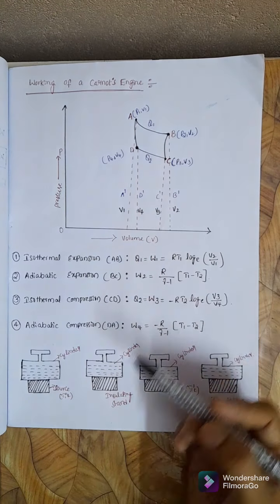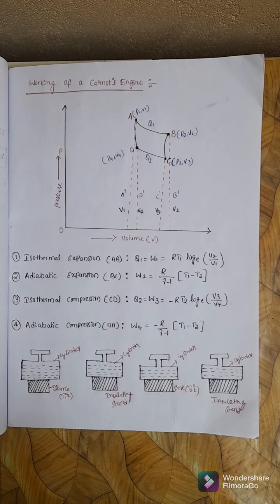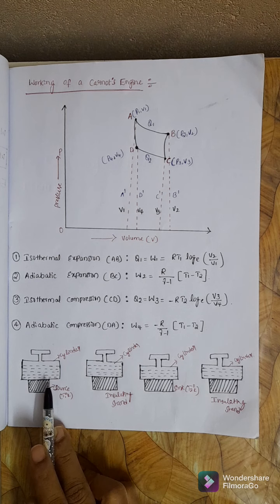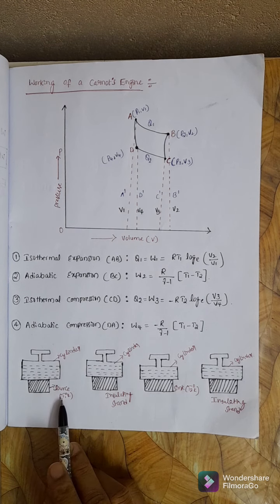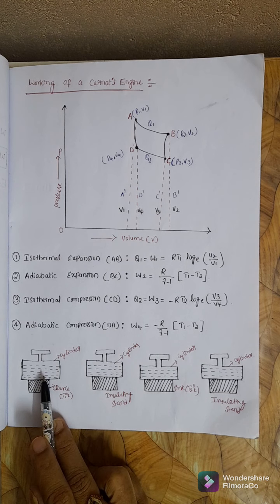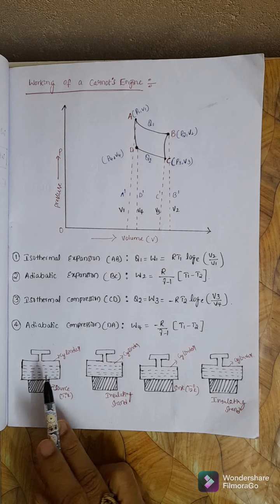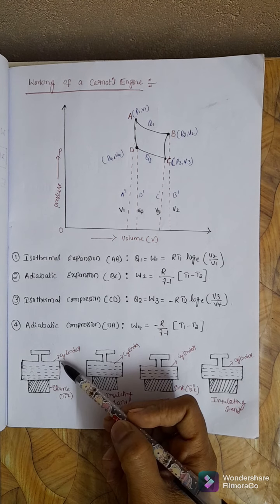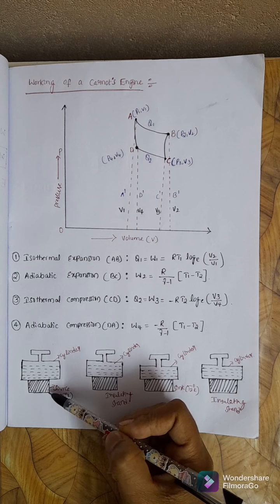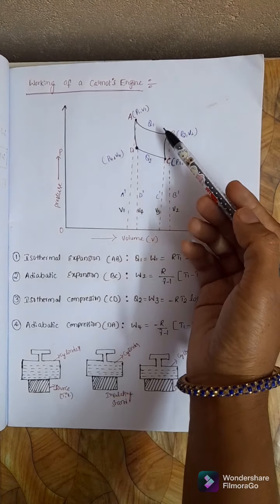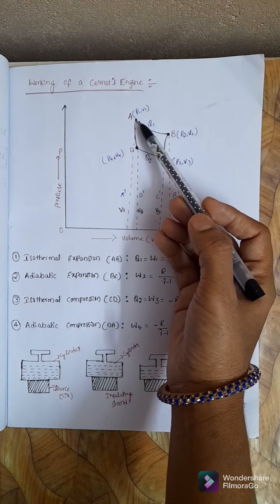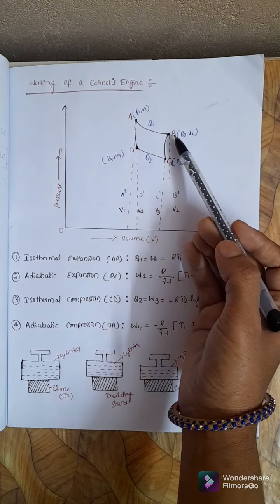For isothermal expansion from A to B, consider a cylinder with a source at temperature T1 Kelvin. The cylinder consists of a working substance — a perfect gas. Consider one gram mole of an ideal gas enclosed in a cylinder fitted with a mobile piston. The cylinder is placed over the source, and the gas takes an amount of heat Q1, allowing expansion from A to B.